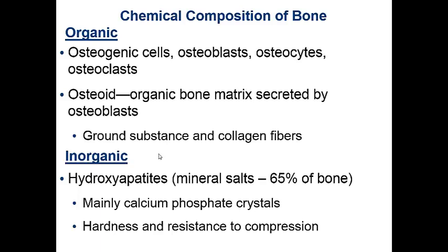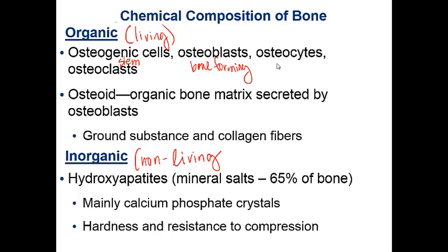The chemical composition of bone includes an organic component — the living material containing cells — and an inorganic component, the non-living material. The organic component includes the cells: osteogenic stem cells, osteoblasts (bone-forming cells), mature osteocytes, and osteoclasts (bone-destroying cells), as well as osteoid produced by the cells.